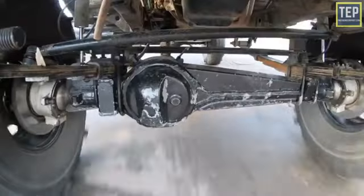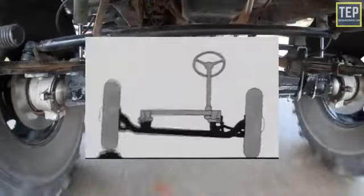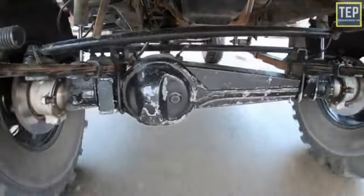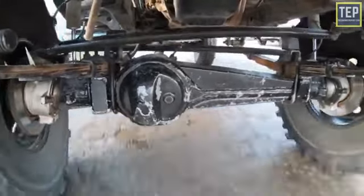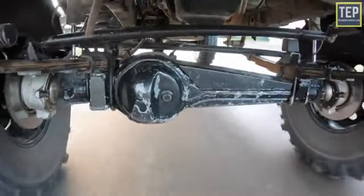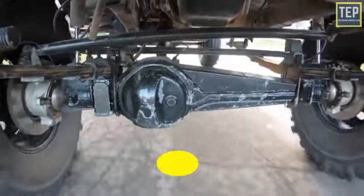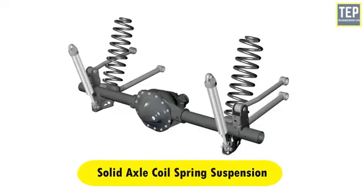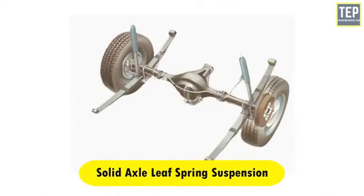In non-independent or rigid axle suspension, both wheels on the same axle are dependent on each other via a solid or live axle, allowing both left and right wheels to connect together as a unit. If one side bends in one direction, the other side also bends in the same direction — this is called dependency. There are two types: solid axle leaf spring suspension and solid axle coil spring suspension.